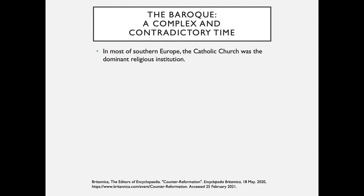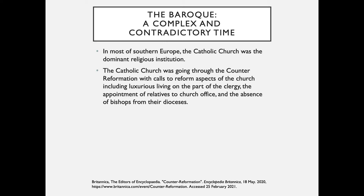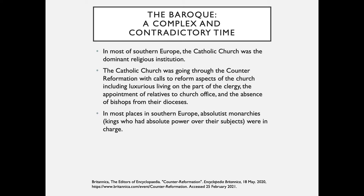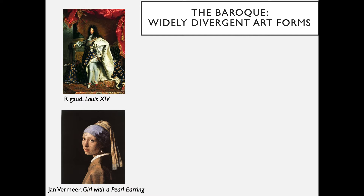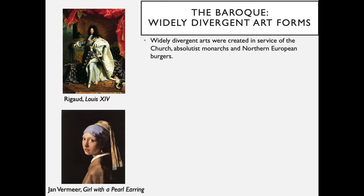In most of Southern Europe, the Catholic Church was the dominant religious institution, going through the Counter-Reformation, with calls to reform aspects of the Church including luxurious living by the clergy, appointment of relatives to church office, and the absence of bishops from their dioceses. In most of Southern Europe, absolutist monarchies — kings who had absolute power over their subjects — were in charge. In the North, Protestantism was on the rise, alongside growing capitalism. Widely divergent arts were created in service of the Church, absolutist monarchies, and Northern European burghers.